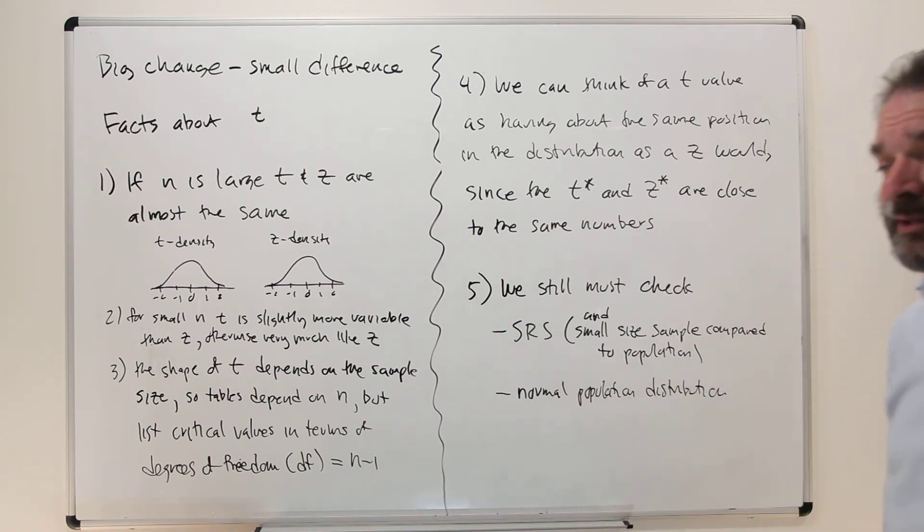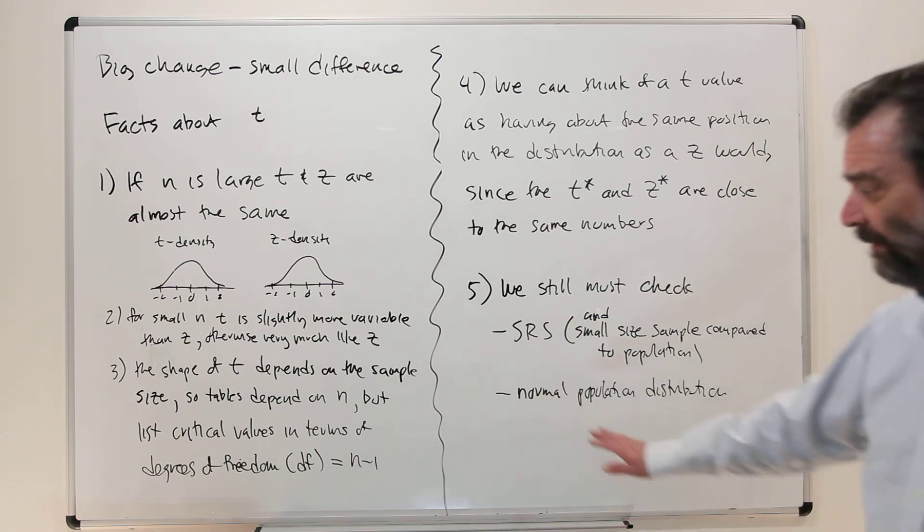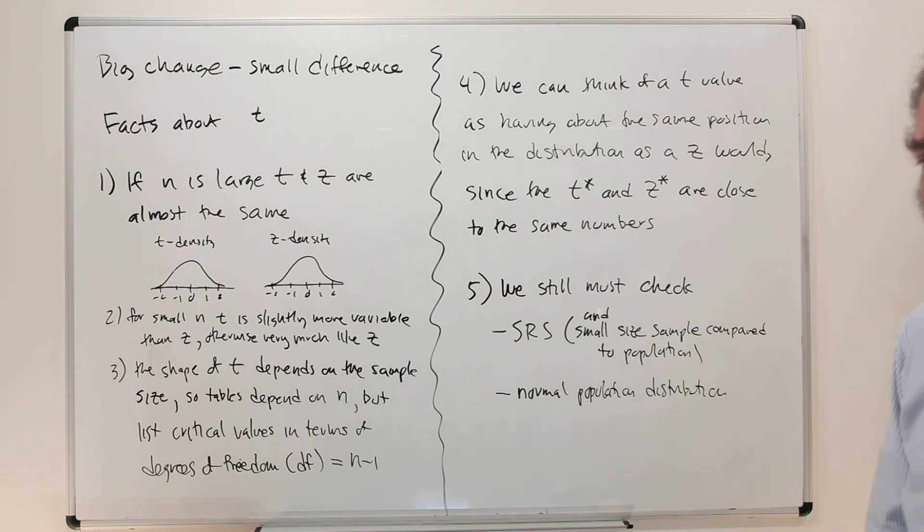And we still need a normal population distribution if n is small. It becomes less essential for t-procedures than for z-procedures to have an exactly normal population distribution, because we'll find out later on that t-procedures are called robust. And robustness means they still function fairly well even if you don't have an exactly normal population distribution. None of the things we could carry out work very well if you don't do sampling in an appropriate manner. You can't overcome that. But overcoming the normal population distribution, some statistics don't care that much. As long as it's roughly normally shaped without outliers, things can be okay. And t tends to be that way.